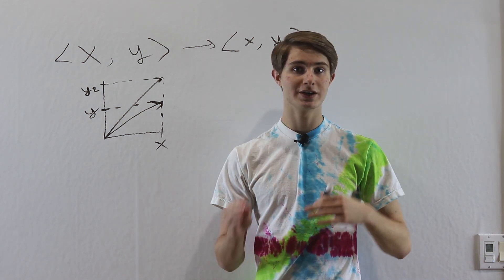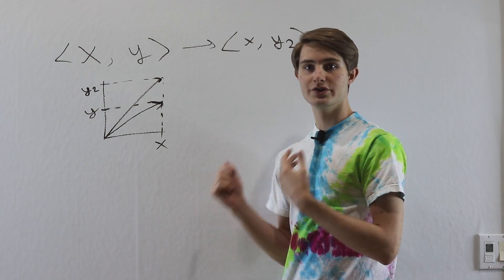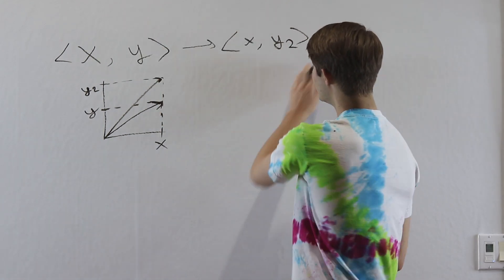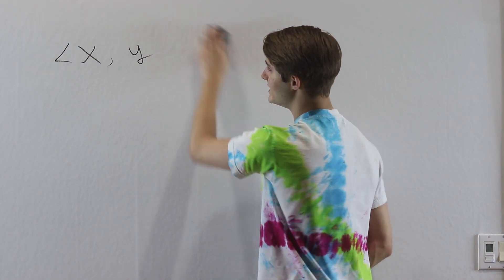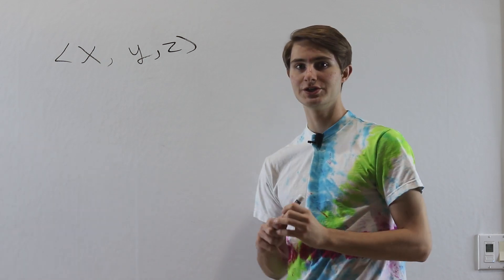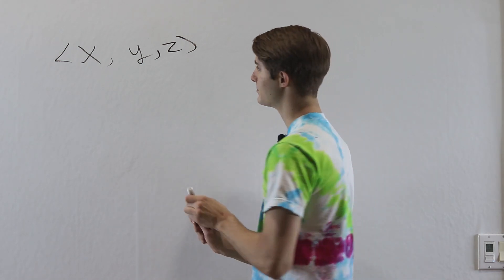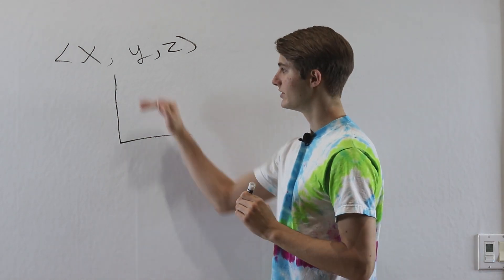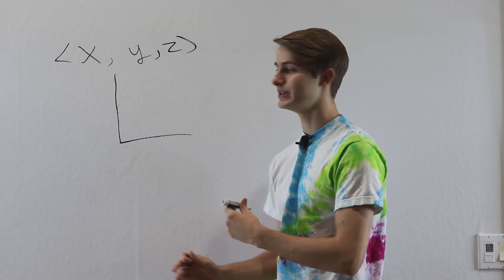Right now we've been looking at vectors in two dimensions, but a lot of times we want to look at higher dimensions as well. Say instead of just x and y, we had x, y, and a third component z. So now we're going to have to look at three different dimensions. To represent this spatially, we need three axes — we've been looking at a horizontal and a vertical axis, but for three dimensions we're going to need a third axis as well.